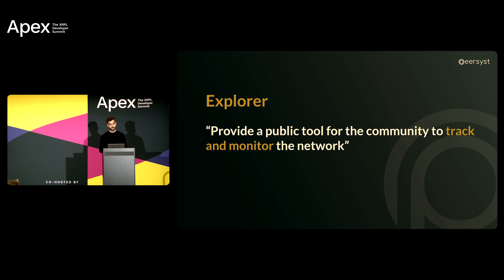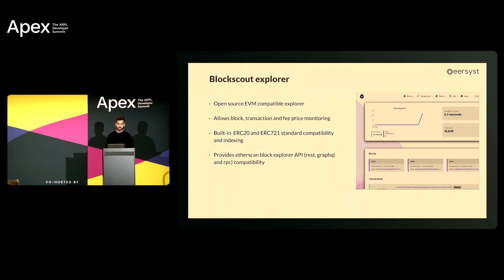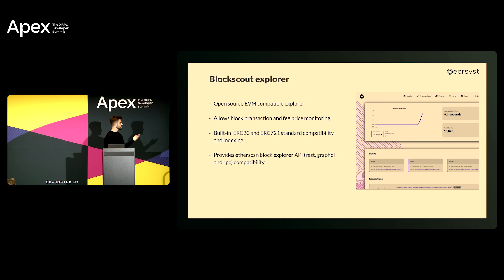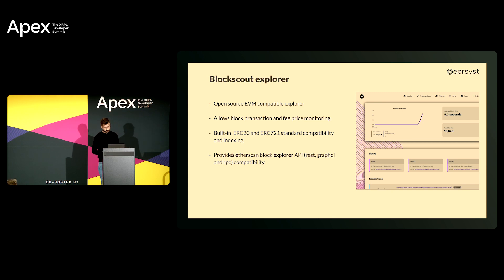Now let's talk about the Explorer. The Explorer allows users to track and monitor the network, transaction status, and blocks. We found that BlockScout Explorer is a really nice open-source tool for this. It allows block, transaction, and gas price monitoring since it's EVM-based. It also has built-in ERC-20 and ERC-721 standard compatibility, so every deployed ERC-20 token is visible on the Explorer. It also has an Etherscan-compatible API, which is really useful for developers.